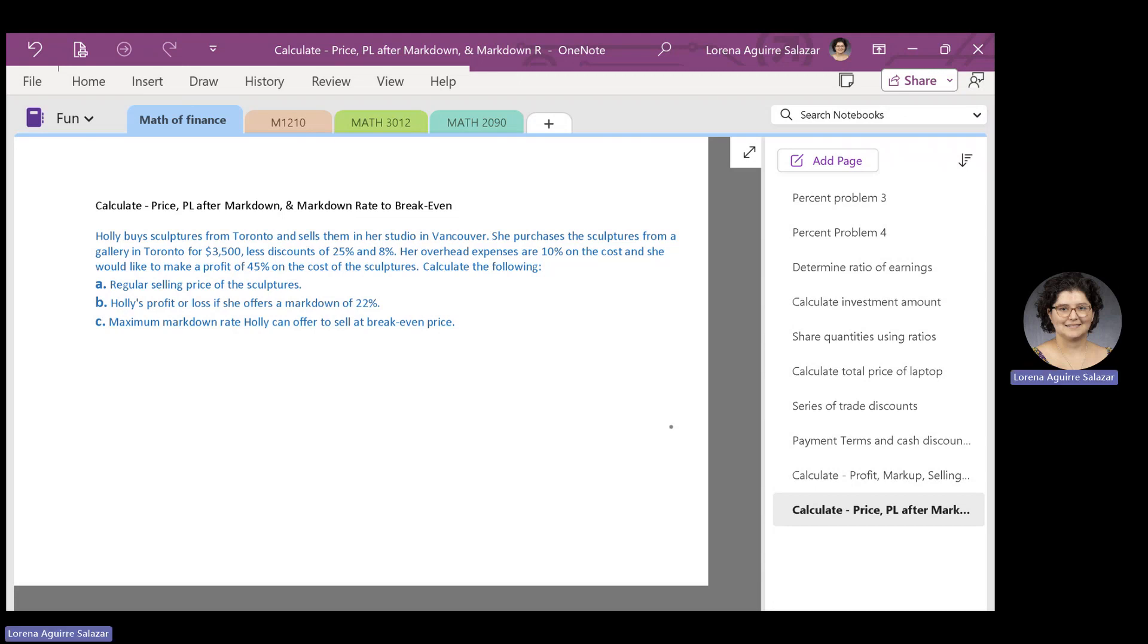Calculate the following. First, the regular selling price of the sculptures. Second, Hoed's profit or loss if she offers a markdown of 22%. And third, the maximum markdown rate Hoed can offer to sell at break-even price.